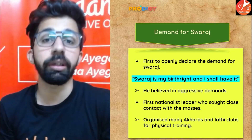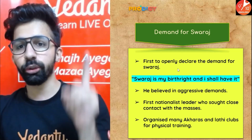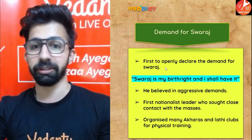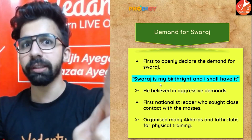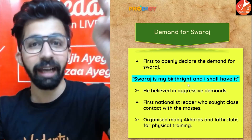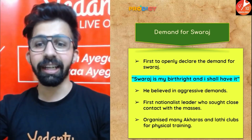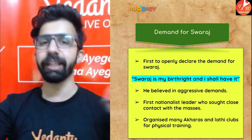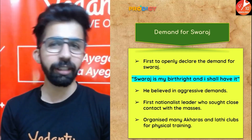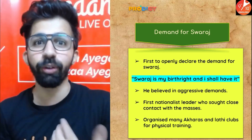Swaraj means independence and freedom. Tilak was the first person to openly declare the demand for Swaraj. He said, 'Swaraj is my birthright and I shall have it.' He believed in aggressive demands — all assertive nationalists were extremist in nature and did not follow the constitutional means set by the British.